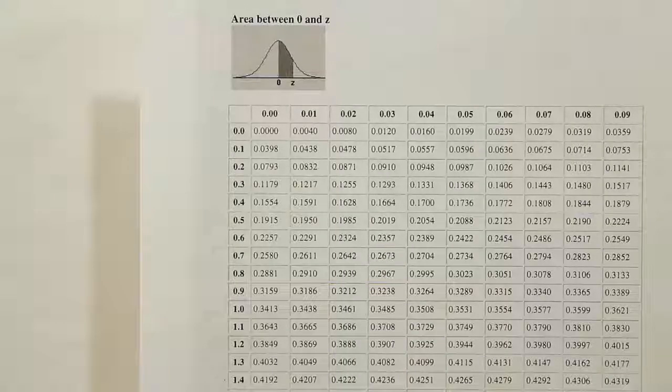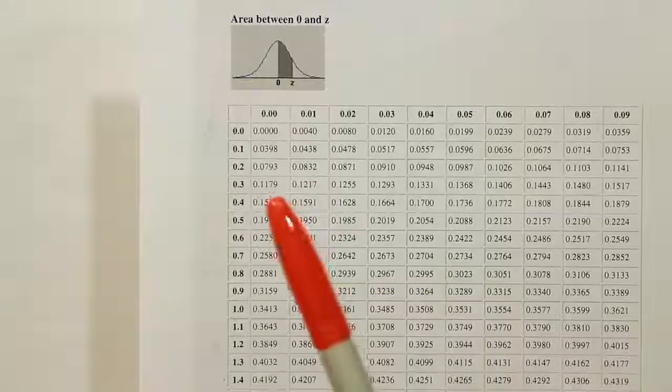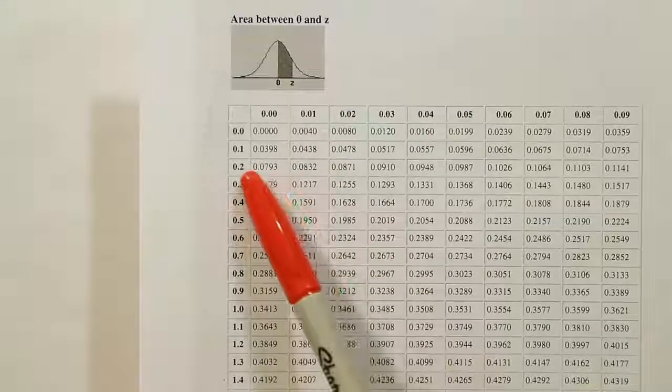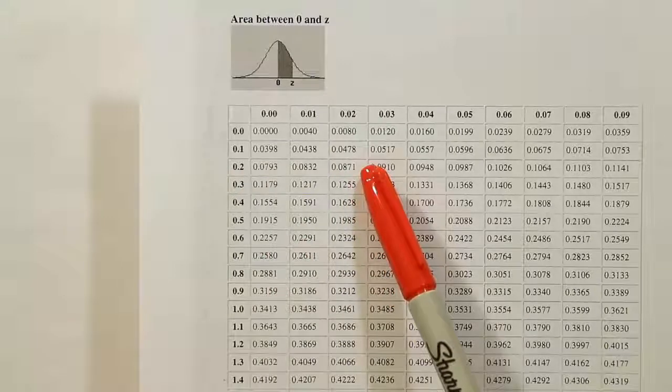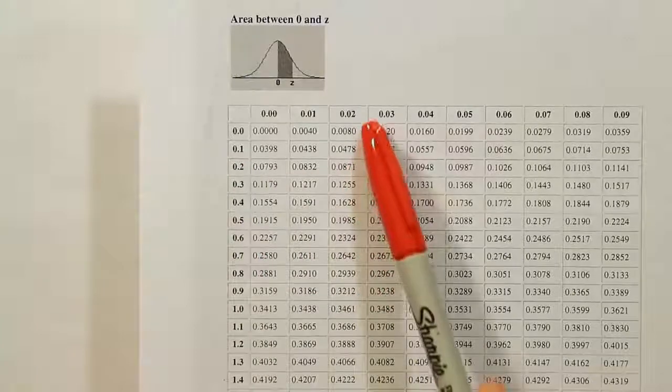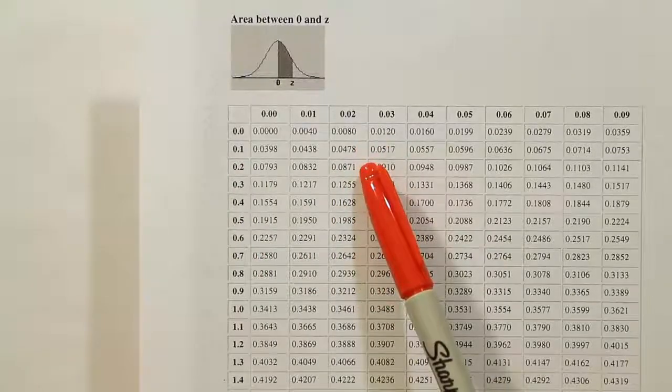Now we're looking up 0.22 on the z-chart. 0.22 gives us 0.0871 as our value.